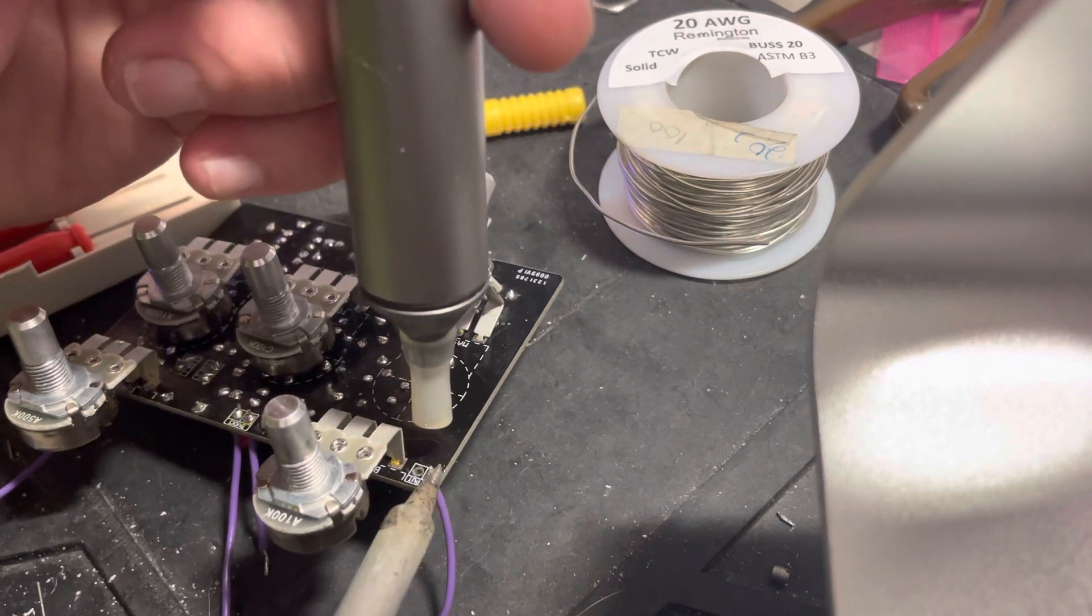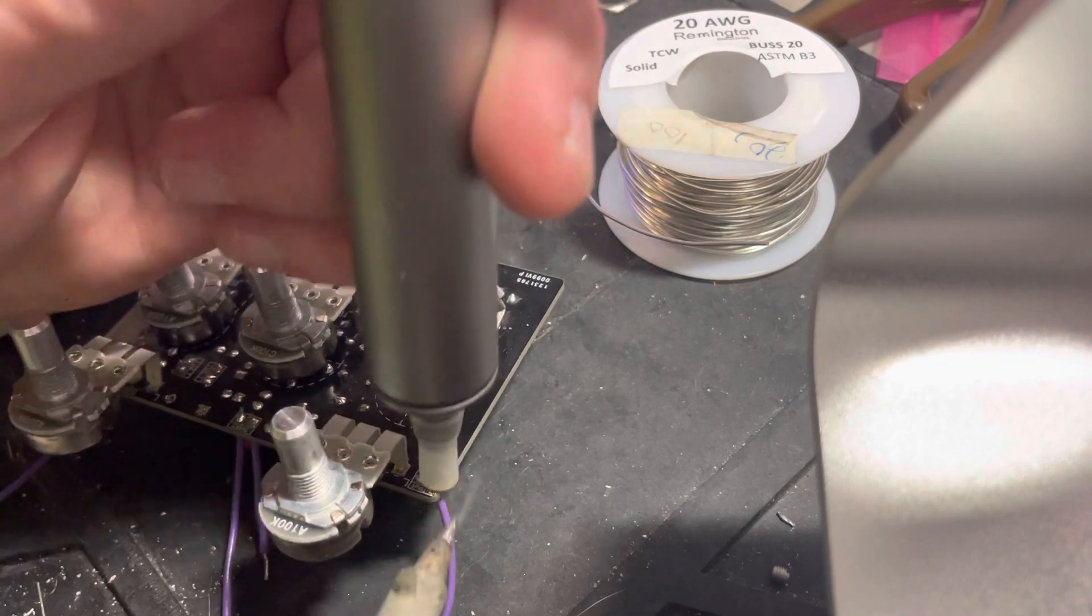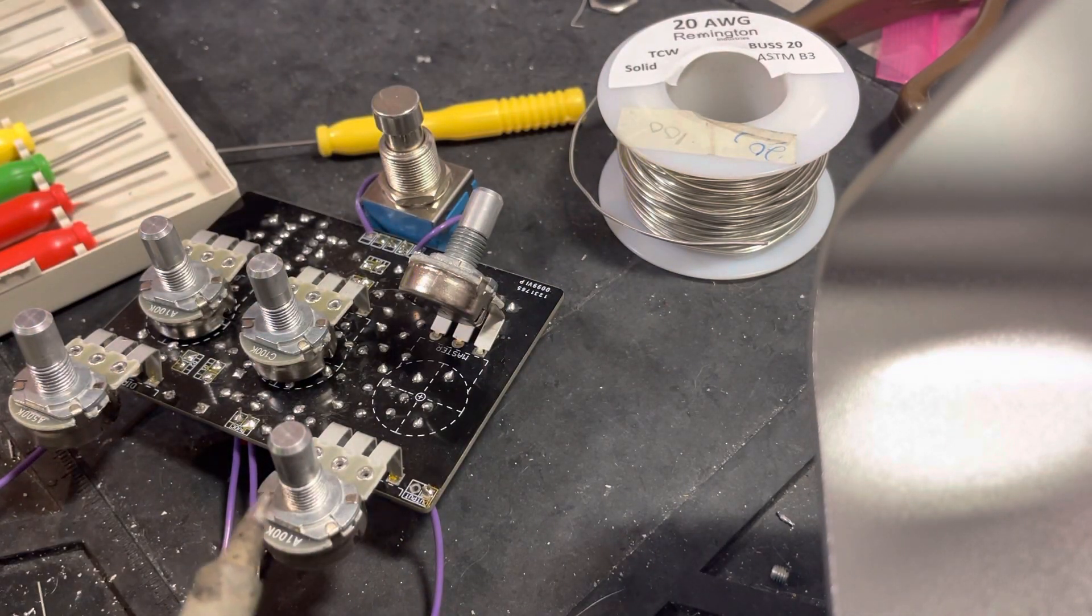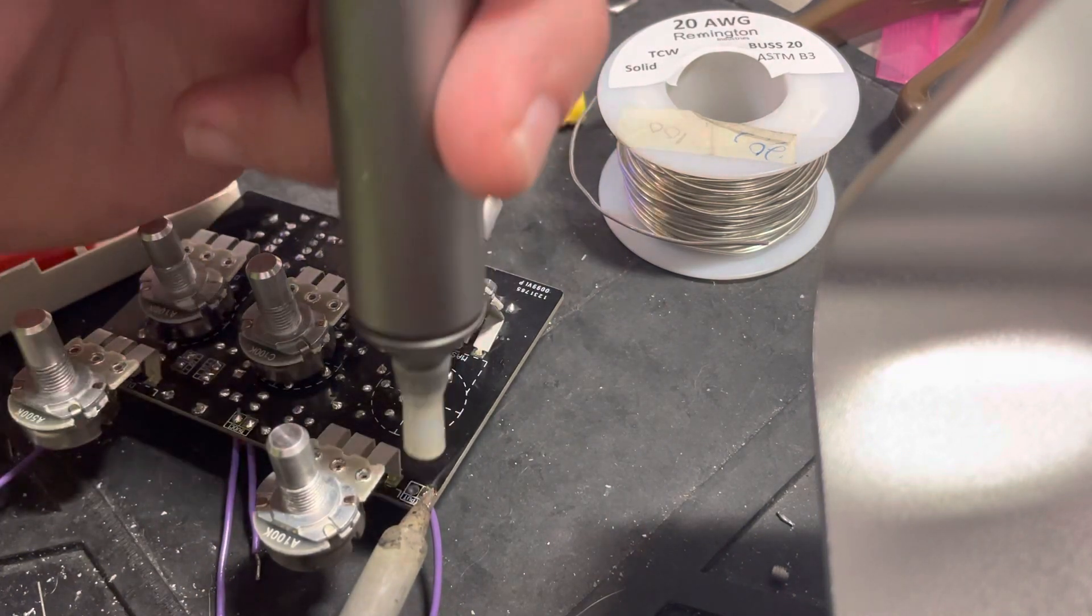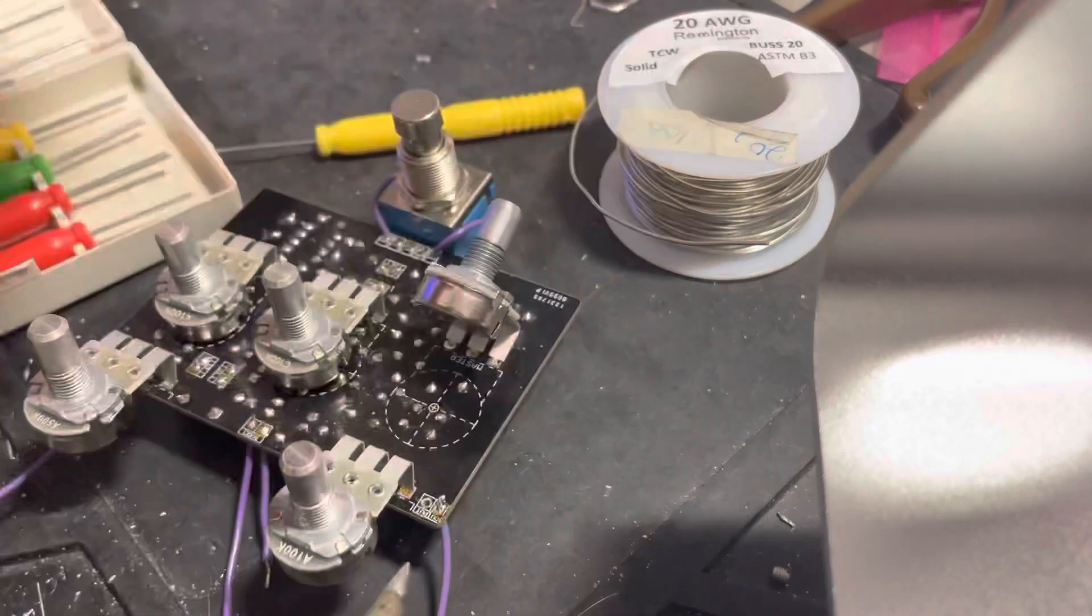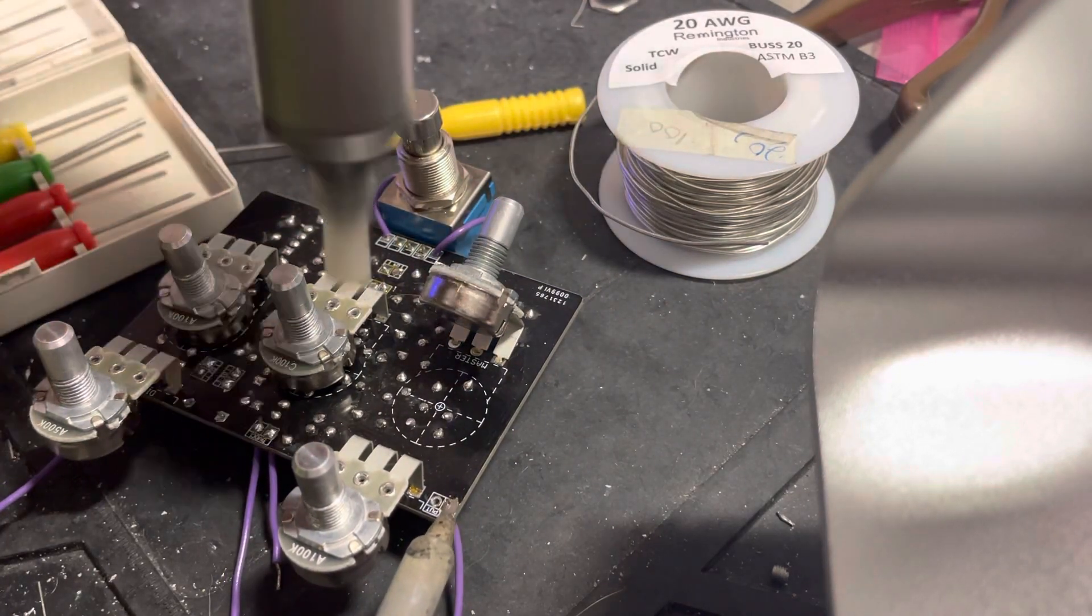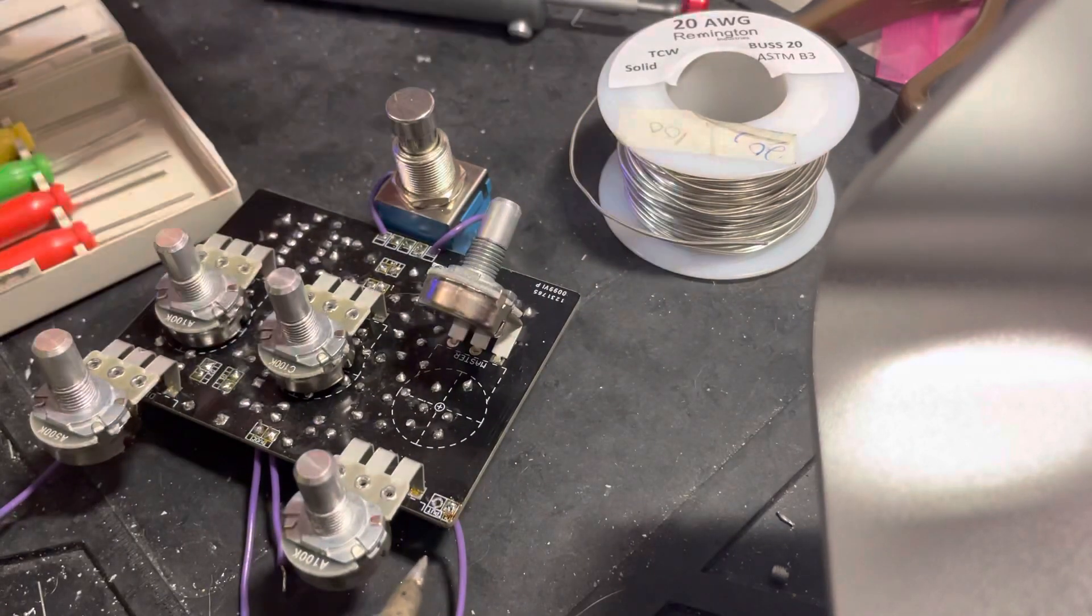When you remove the solder all the way, you kind of make sure that there's nothing on the back side. Because the issue with that is if you push too hard and there is solder on the back side of the pad, you will actually push that pad off completely and then you won't have a place to solder.